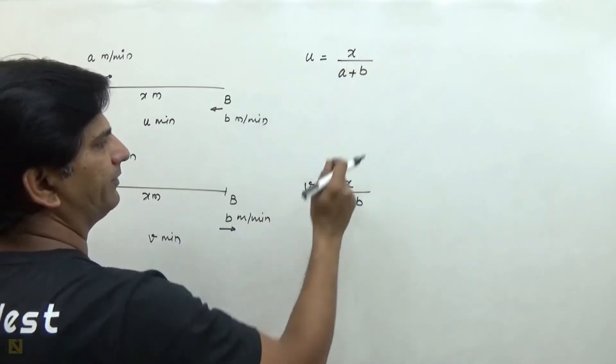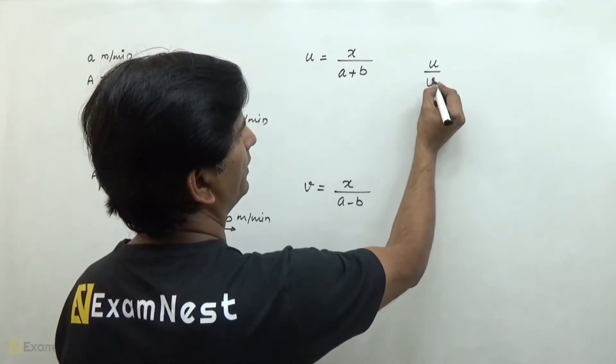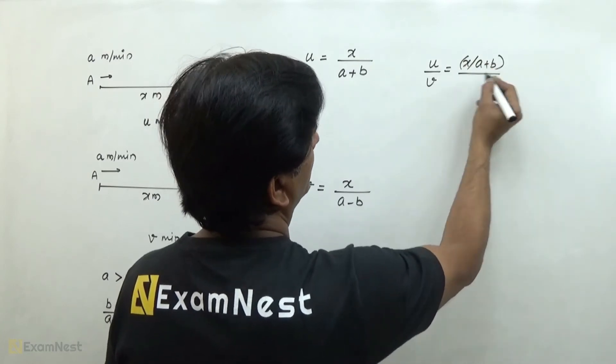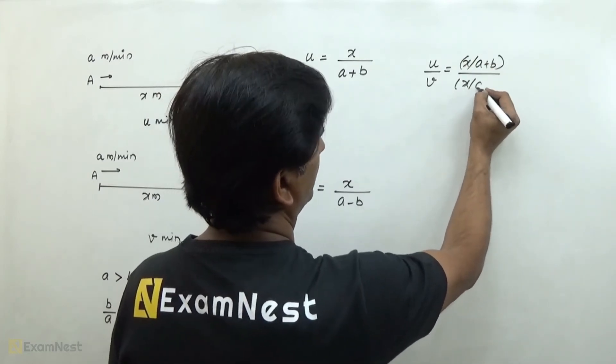If we divide this, then we get u over v is equal to x over (a plus b) divided by x over (a minus b).